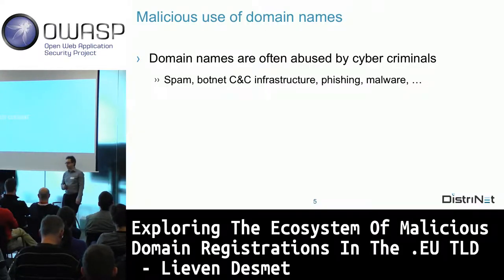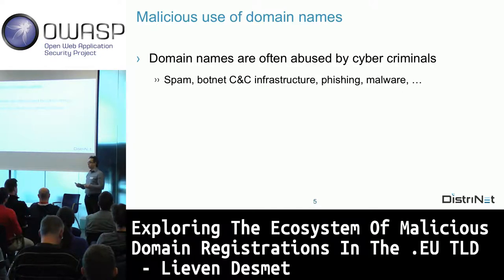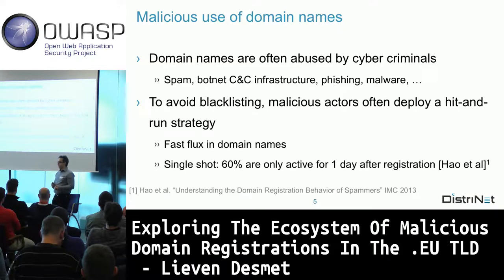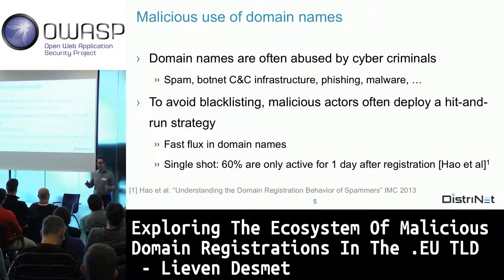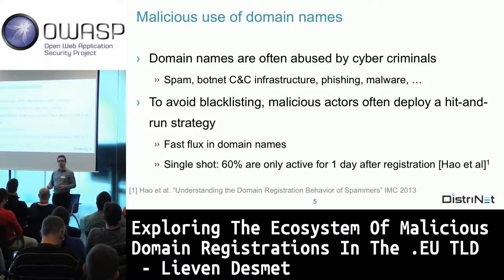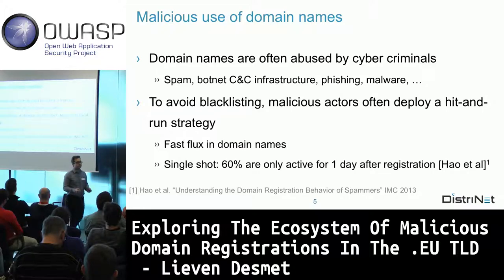Domain names are a key factor for attackers—they use them as an enabler. For spam they need domains to send mail from; for command and control in botnets, domain names are easier to replace than fixed IP addresses; same for phishing and malware. The trend is a hit-and-run strategy: use a domain name and discard it, because once blacklisted it's useless. Already in 2013, 60% of malicious domain names were not used after one day—a single shot.